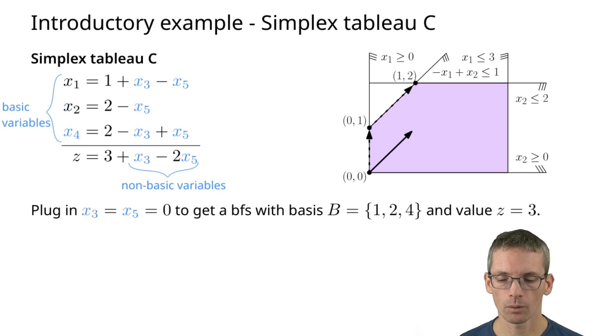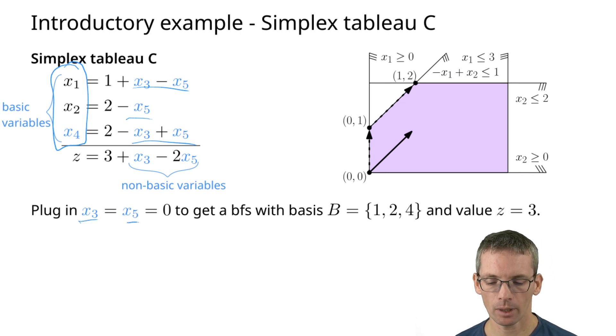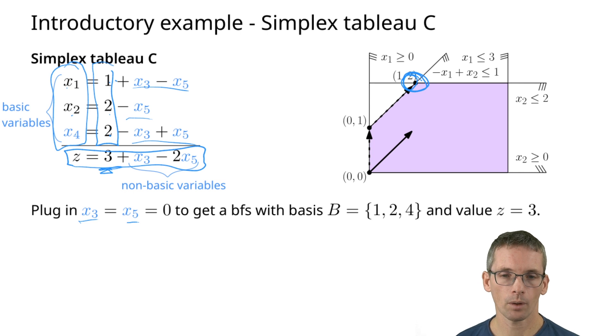This is the resulting simplex tableau. Here again we have only the non-basic variables. These are my new basic variables. I can again read off what my basic feasible solution is by setting x3 and x5 to 0. Then my basic feasible solution is x1 is 1, x2 is 2, x4 is 2. This actually corresponds to this vertex here in 2D because I have 1, 2, and the objective value is 3.